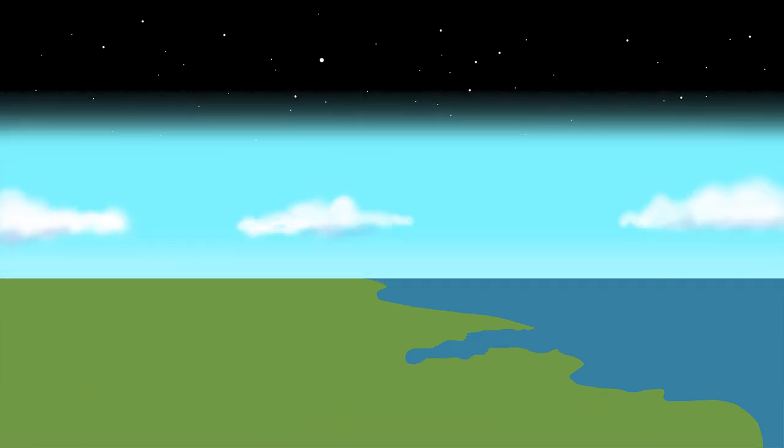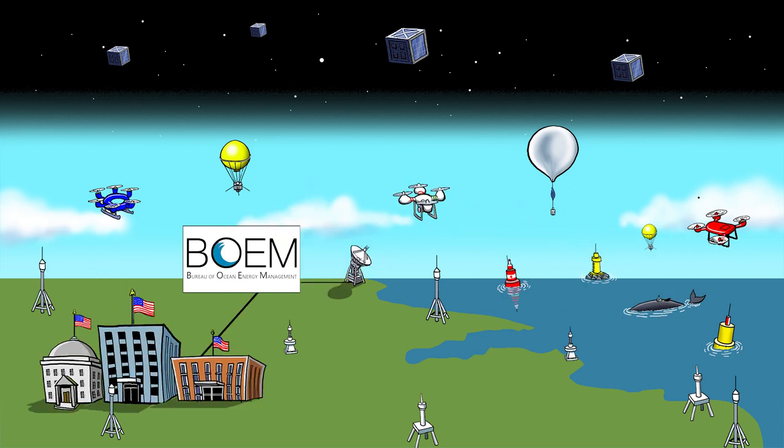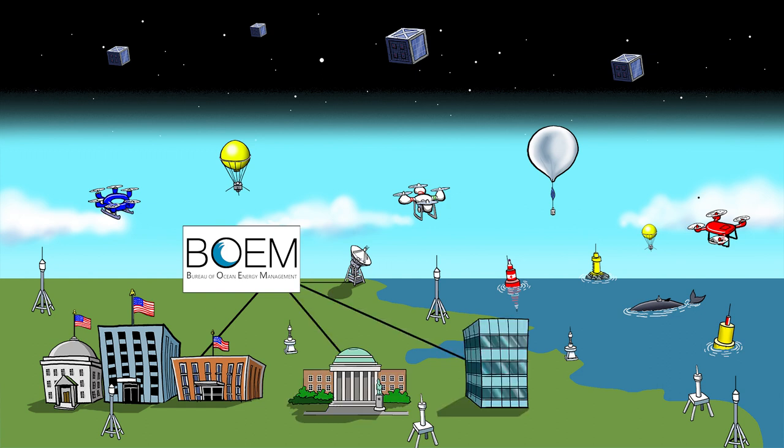This open, modular system will give BOEM the ability to modify and improve its entire environmental monitoring network as new technology is developed, from drones to smartphones to something not yet invented, and allow it to share data with other federal and state agencies, academia, and conservation organizations that rely on satellite data to better understand the marine environment and the animals that live there.